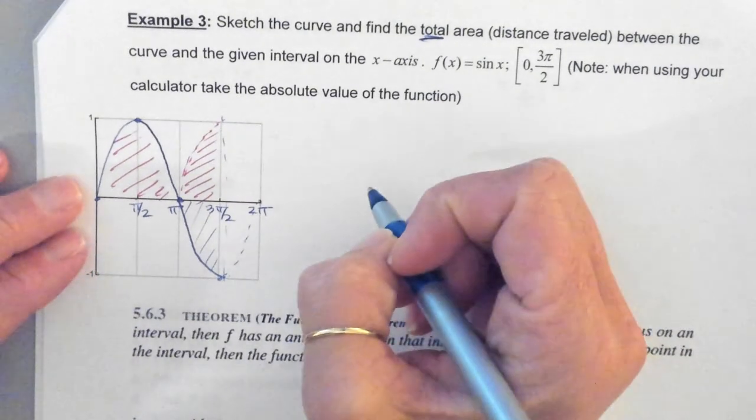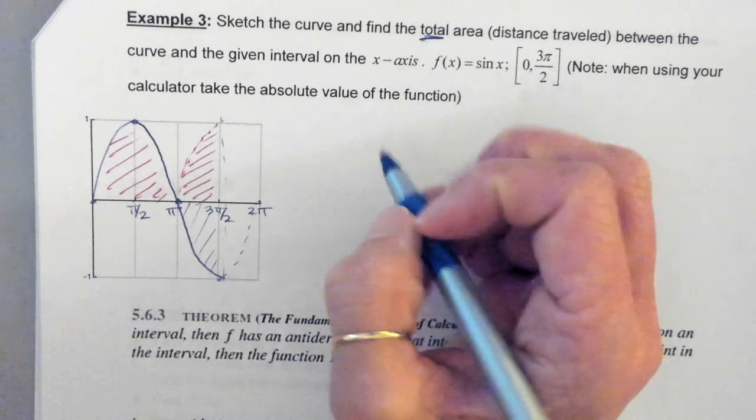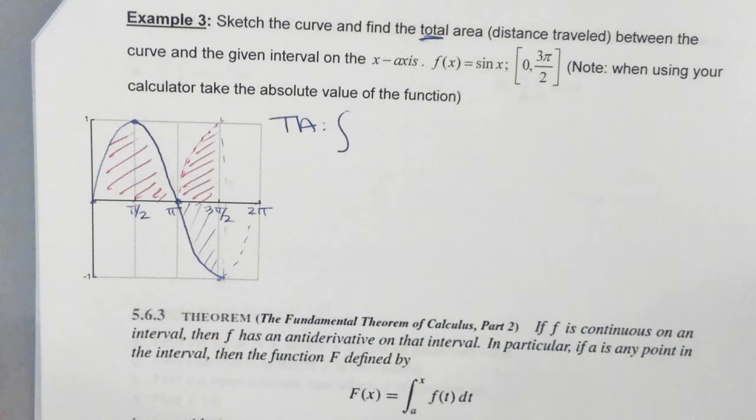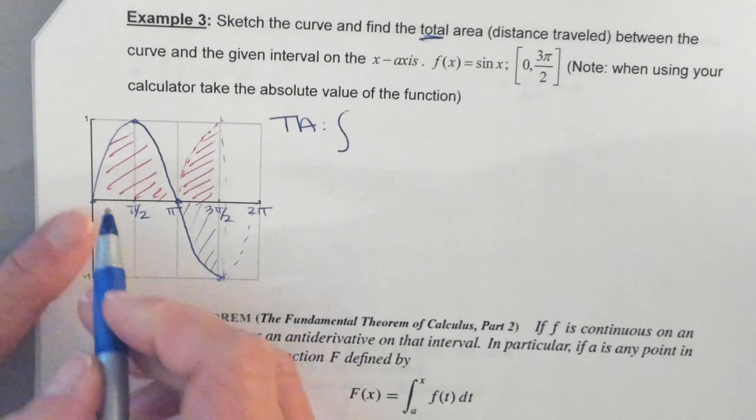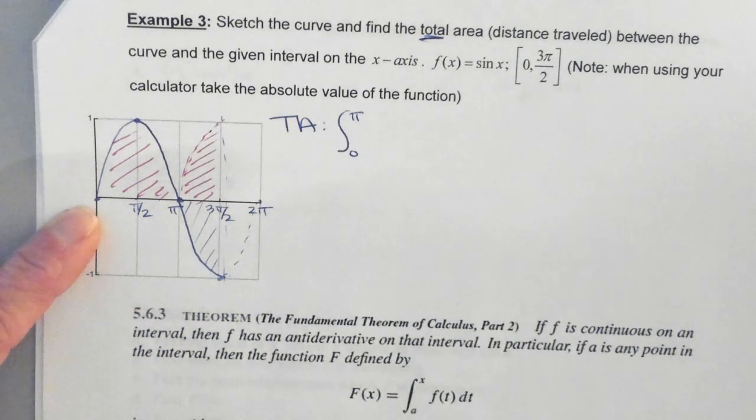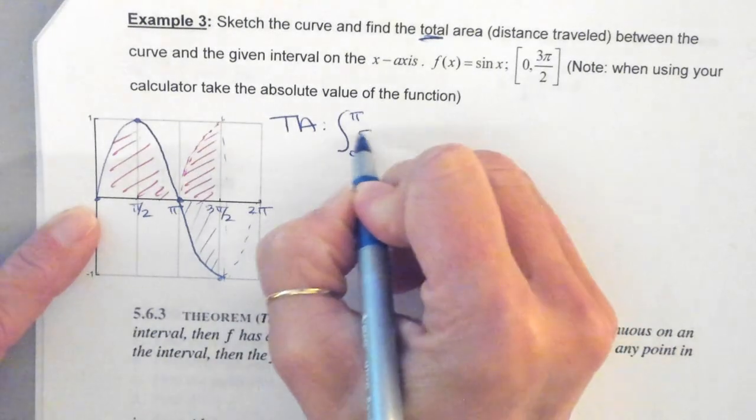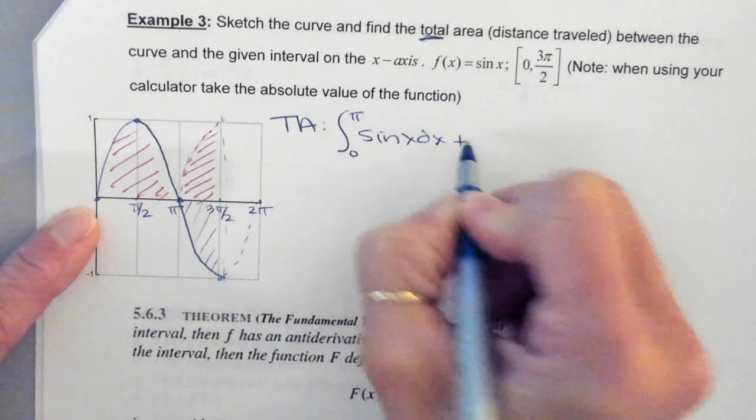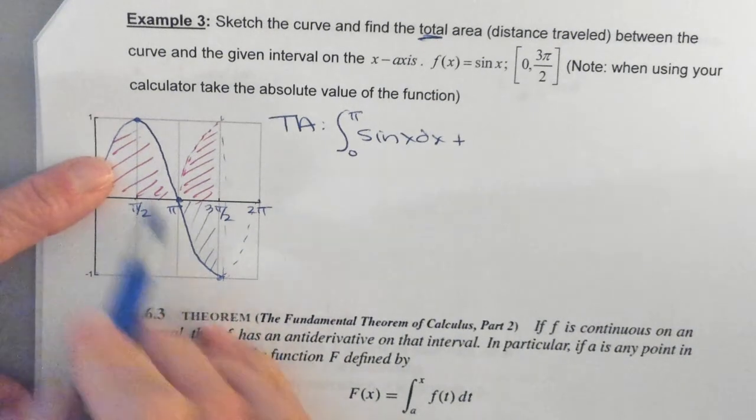So what we're going to do is we're going to split the integral. So to find the total area, we're going to find the area under the curve like this. And what we already have that is above the x-axis goes from 0 to π. And what is the function? Sine of x dx.